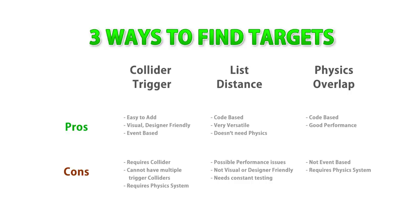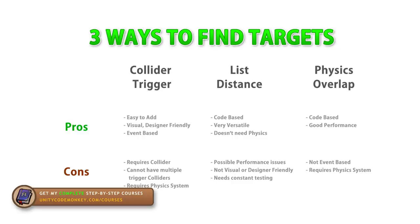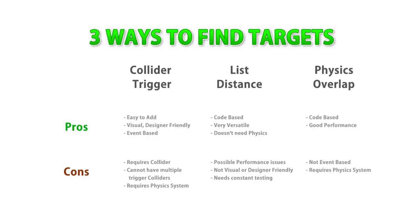So those are the three methods — they all have their pros and cons. For me, I usually go with the second or third method. The first method requires working in the editor and adding an extra collider, so after some time you might forget which script that collider is related to and it can become quite messy. Whereas the other two methods are done entirely with code, so all the logic is in the same place. My approach is to use the list distance method since it's so easy to add, and then if I come across any performance issues I might change it to the third method.